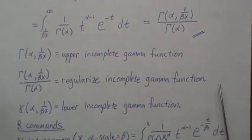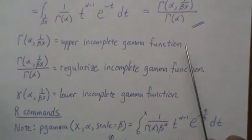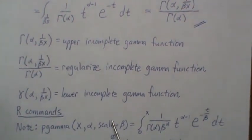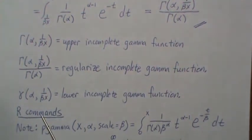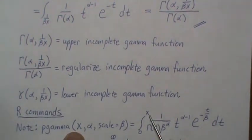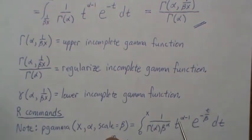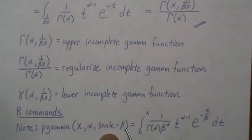Now the R commands that we use to calculate this. Here's a note that if we just take the CDF of the gamma function in R, which is P gamma, and then X here, you know, zero to X, that is alpha.